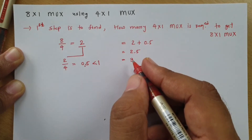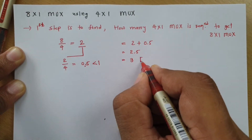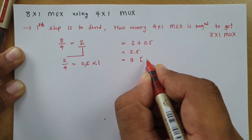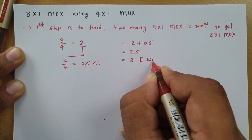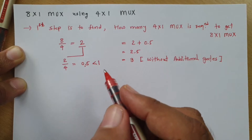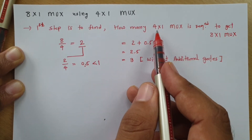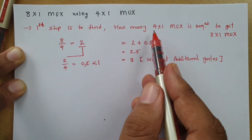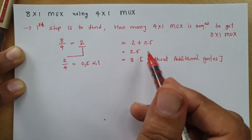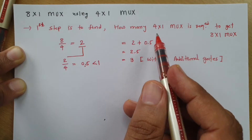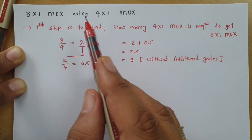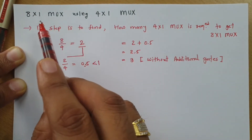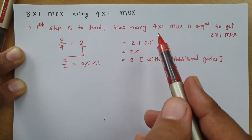With 3 mux we can implement it without any additional gate. So when you use 3 4x1 mux, you don't need any additional gate. However, you might have seen in books that you can implement an 8x1 mux using just 2 4x1 mux. I will explain both ways — first using 2 4x1 mux, and then using 3 4x1 mux.